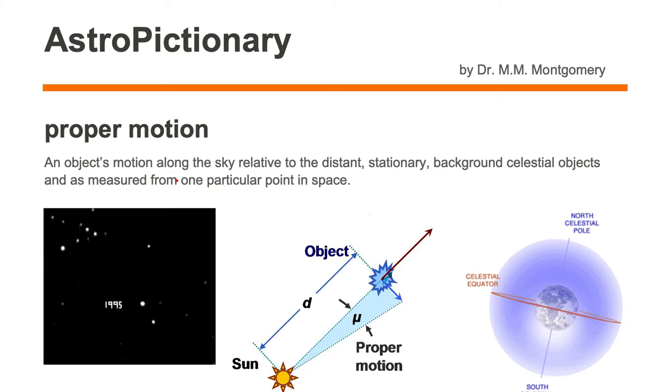Proper motion is an object's motion along the sky relative to the distant stationary background celestial objects and is measured from one particular point in space.